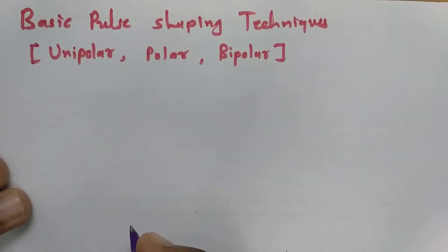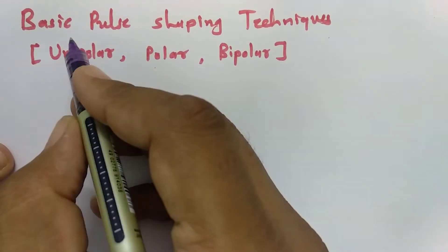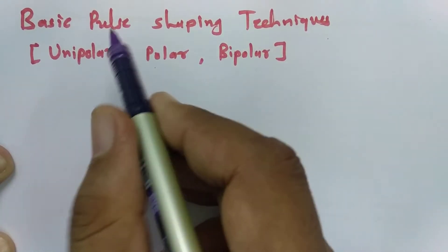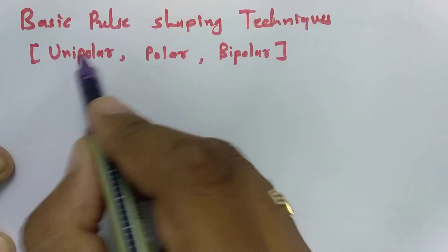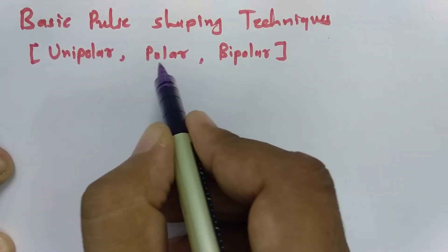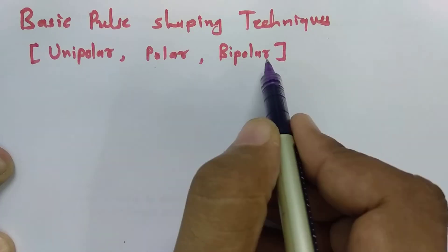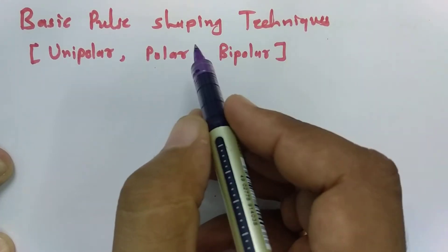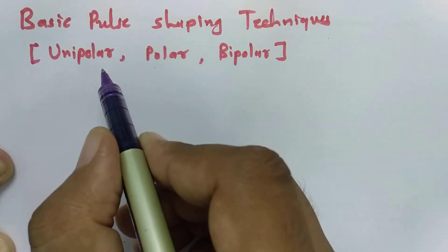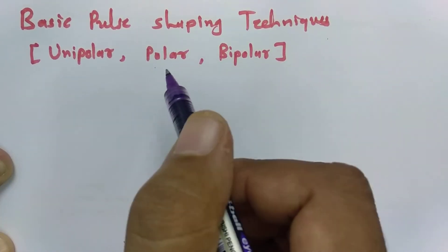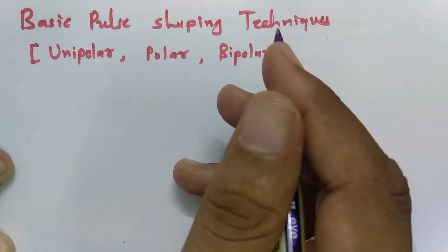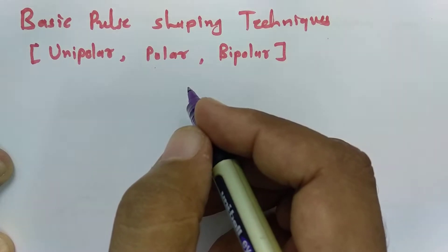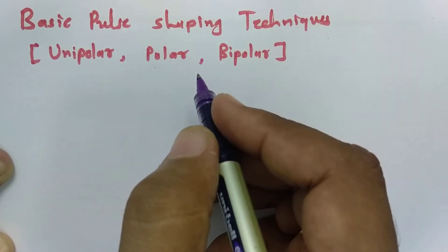Welcome to the digital communication playlist. In this session, I will be explaining basic pulse shaping techniques. I will discuss three basic pulse shaping techniques: unipolar, polar, and bipolar. There are many other pulse shaping techniques available, but these three are the ones generally used in digital communication. This session continues from my previous session where I explained line coding techniques.